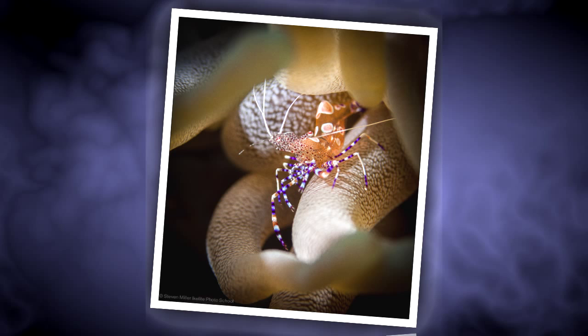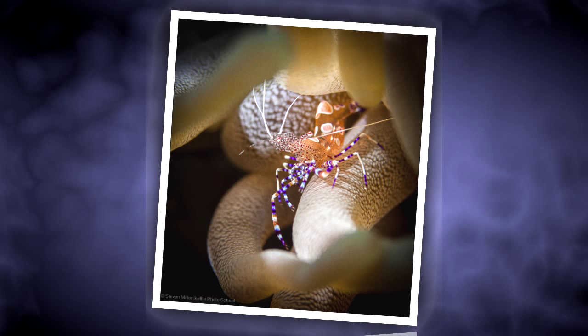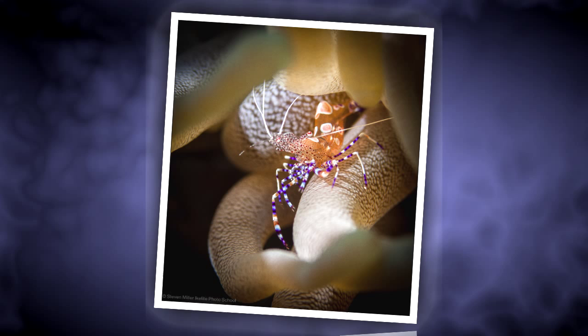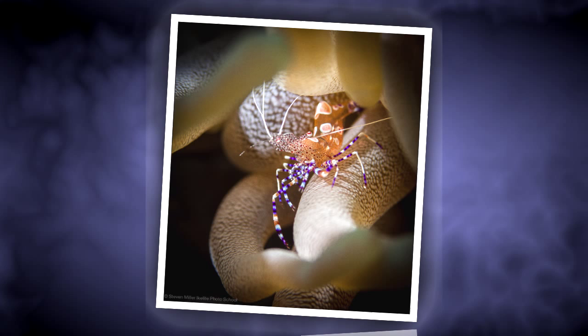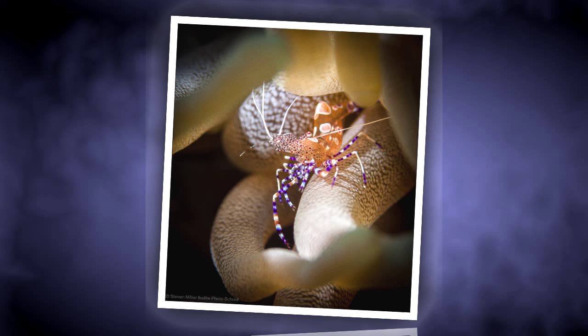A snoot is basically a way of taking all of the light that comes out of your strobe and narrowing it down into a very small beam. In this case, the beam is about the diameter of a dime, maybe an inch across or so. Snoots can be made—I've seen them made out of wetsuit sleeves—or you can buy them commercially.